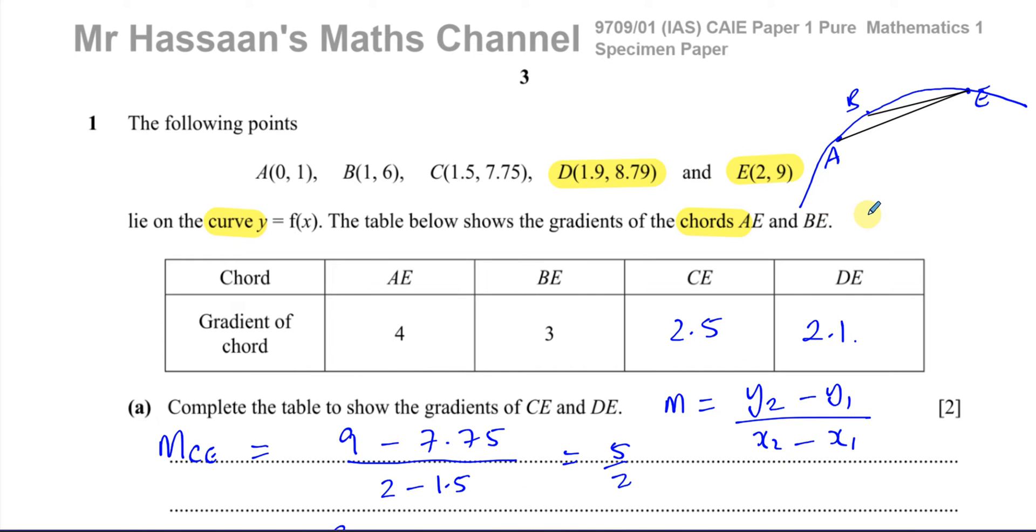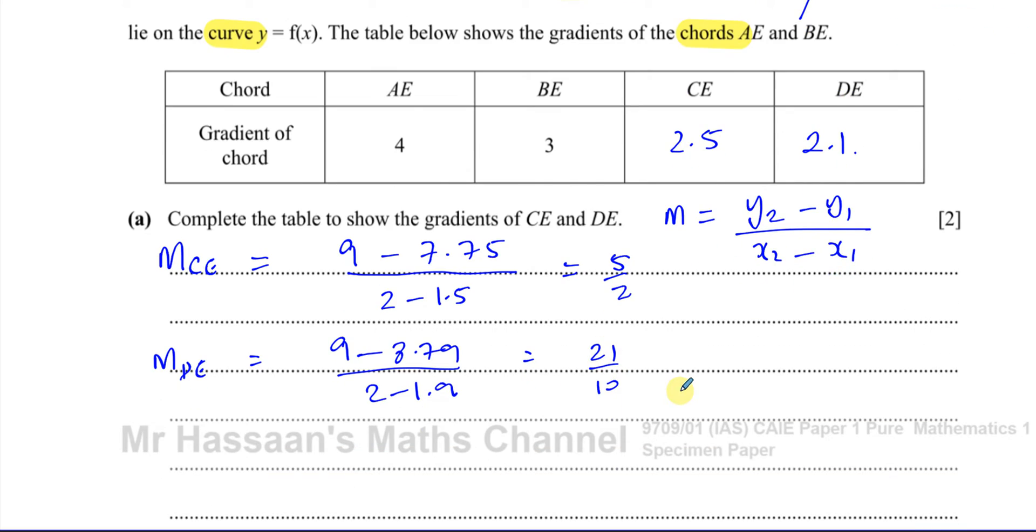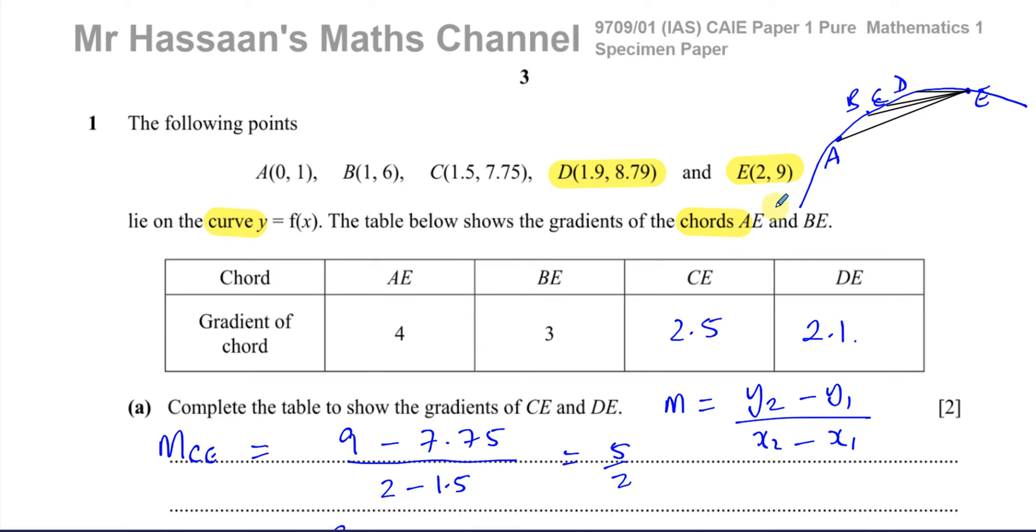So as we can see, the gradient is getting less and less as we're getting closer and closer to E. The gradient is getting less and less. So we've filled in the table. It says complete the table to show the gradients of CE and DE. So we've answered part A. It's basically a part of the syllabus which is about how to find the gradient between two points. So it's to do with straight line graphs, but it's kind of related to curves in terms of understanding what the chord of a curve is.